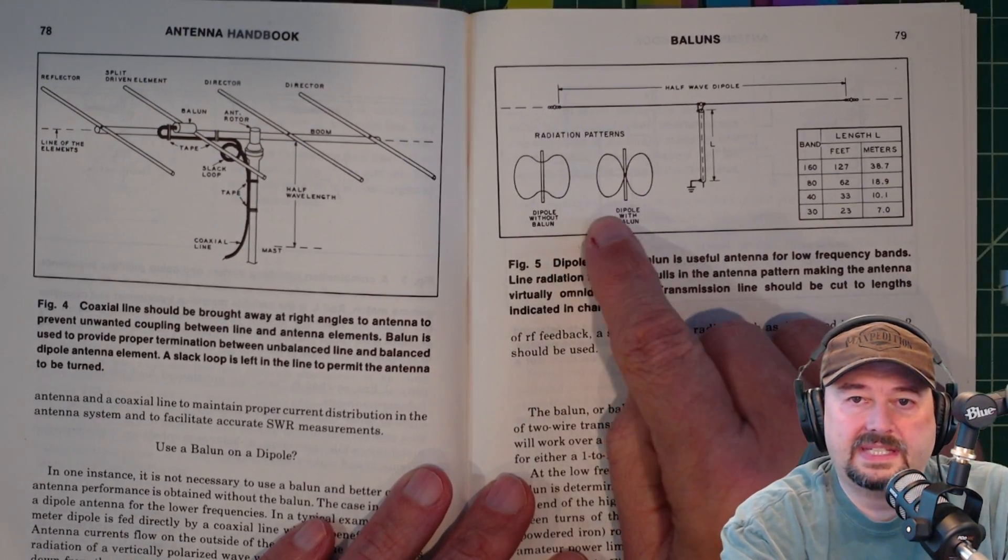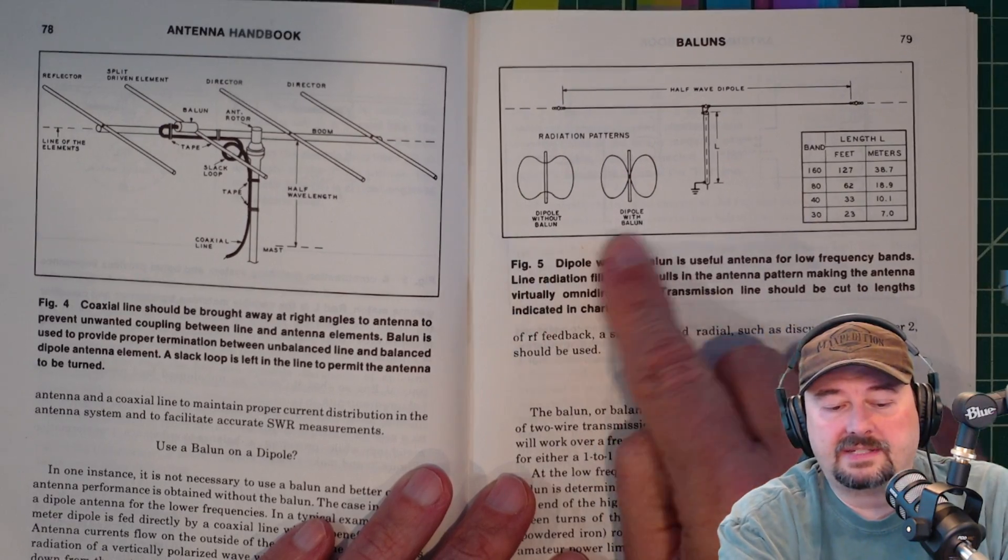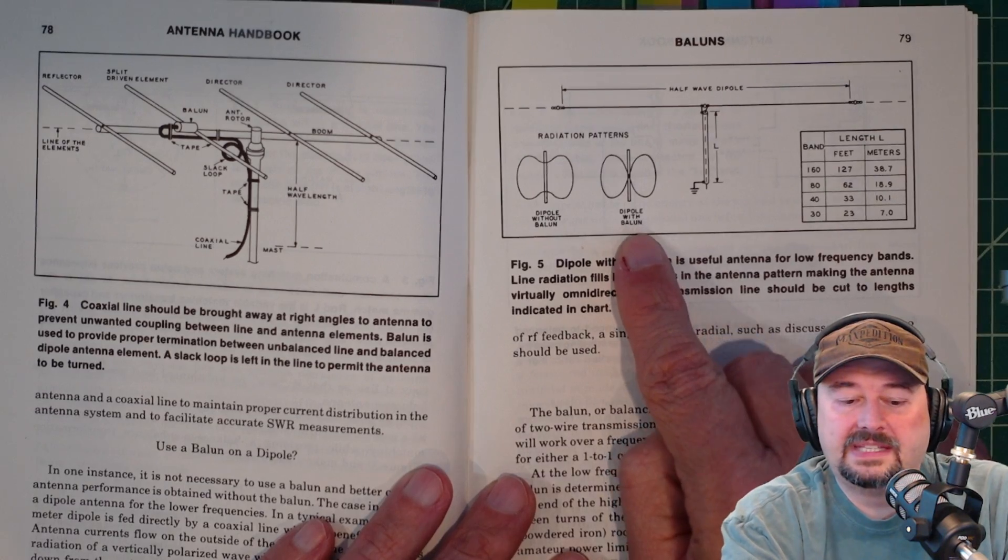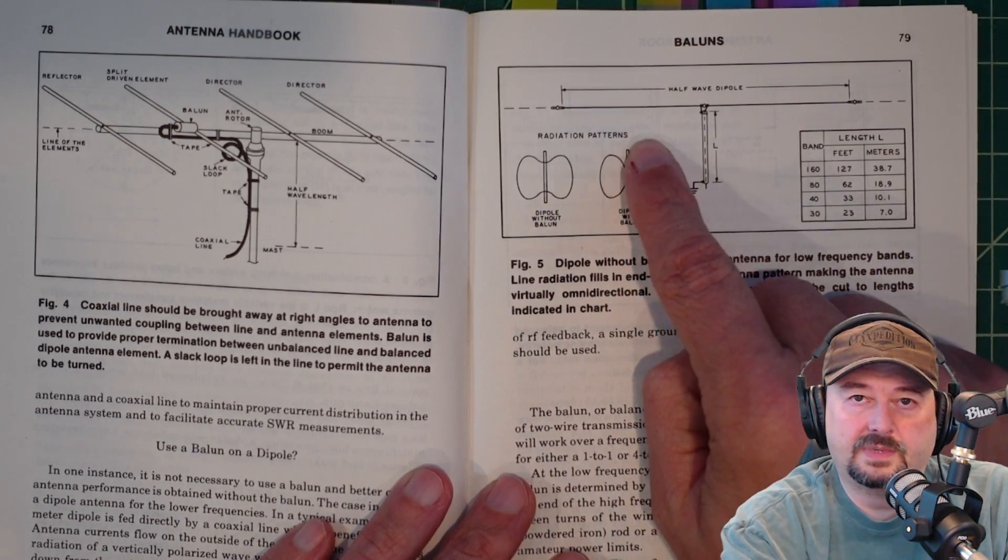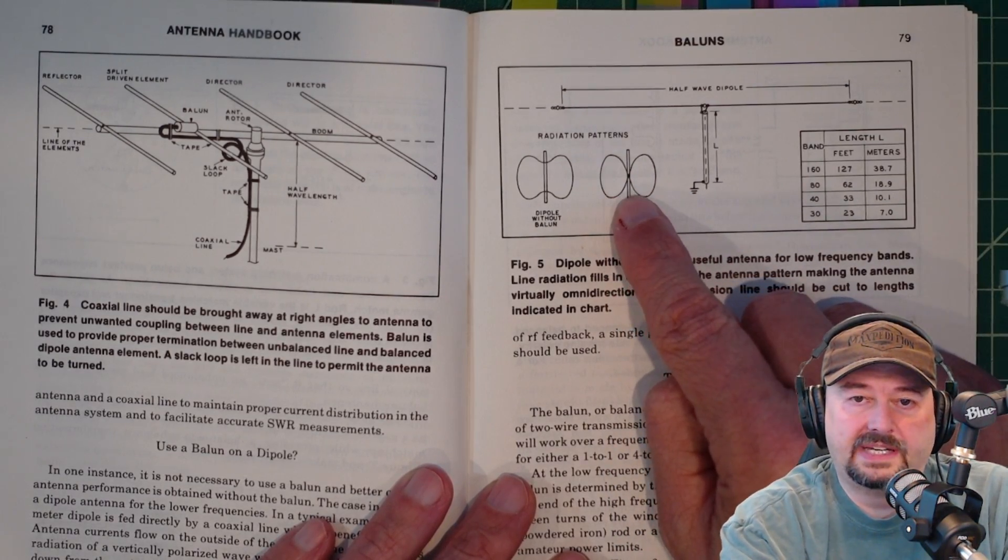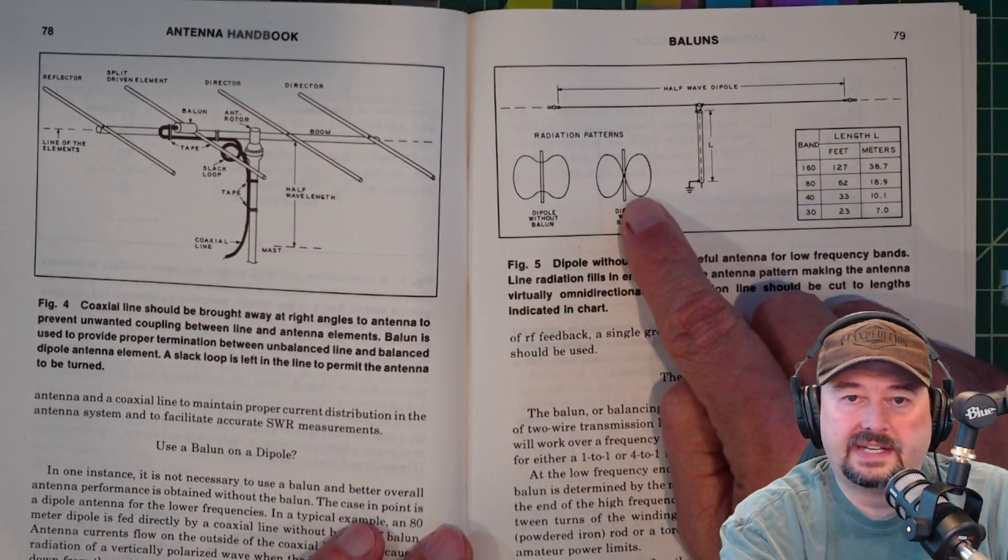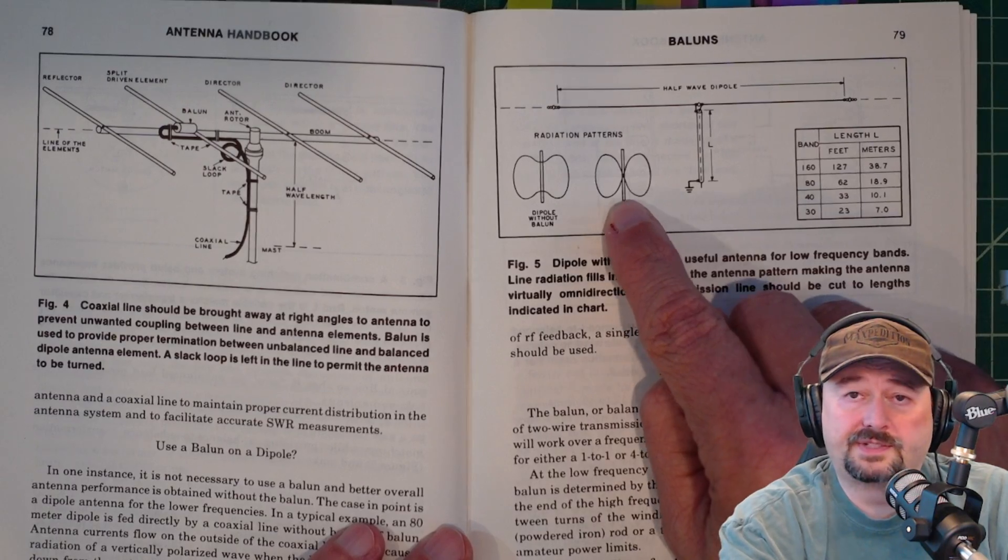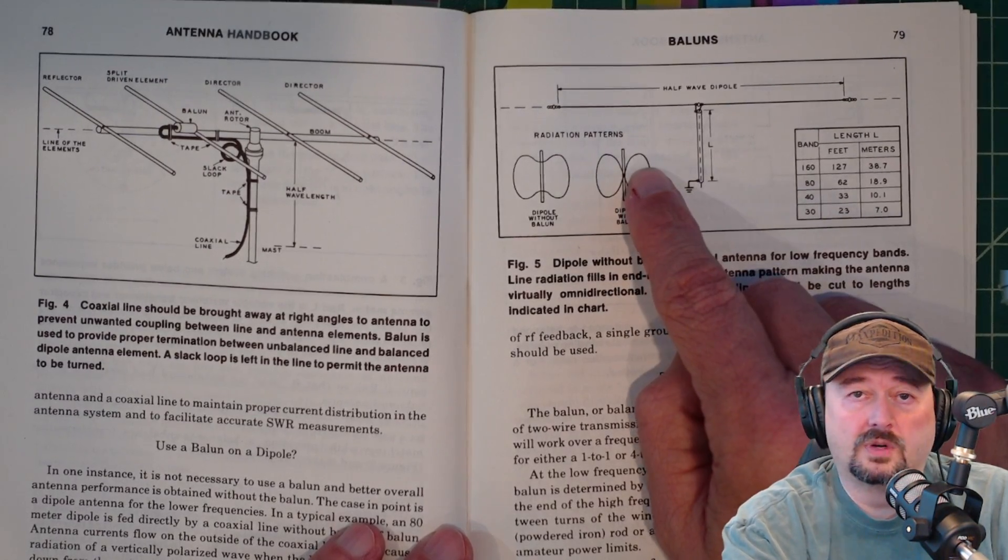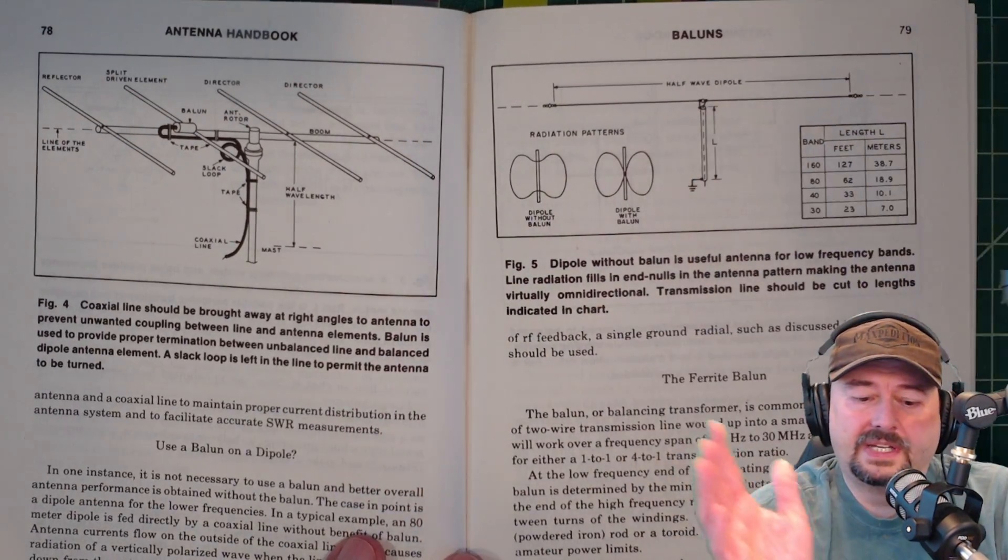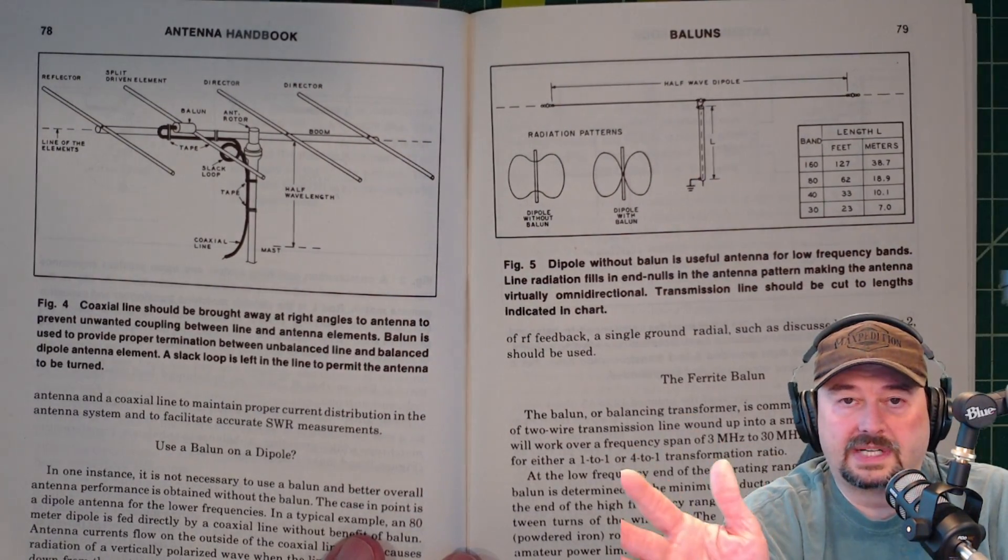So here you can see radiation patterns of the antenna. This one is a dipole with a balun, and when you have that, you can see that you have nulls. This is typically what you would see. These lobes are your radiation pattern as it leaves the broad side of the antenna, but at the ends of your antenna elements, you have null spots, which you cannot receive or transmit on.